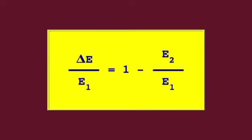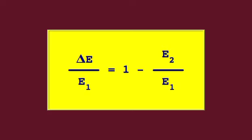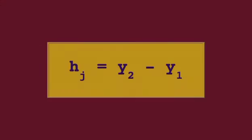The relative energy loss of the jump, the height of the jump, and the relative height of the jump are defined by the following equations.